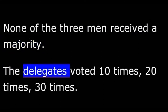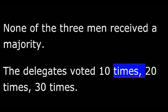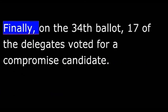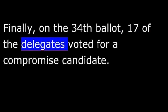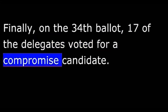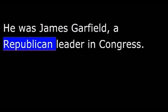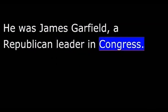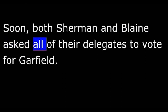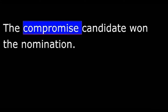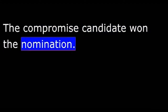The delegates voted ten times, twenty times, thirty times. Finally, on the thirty-fourth ballot, seventeen of the delegates voted for a compromise candidate. He was James Garfield, a Republican leader in Congress. Soon, both Sherman and Blaine asked all of their delegates to vote for Garfield. The compromise candidate won the nomination.